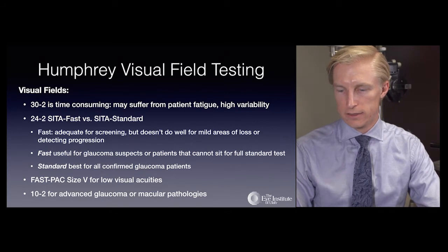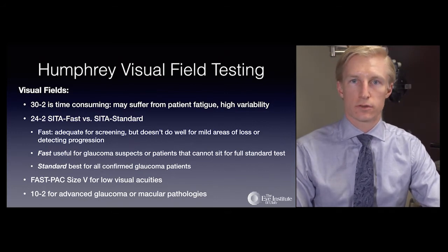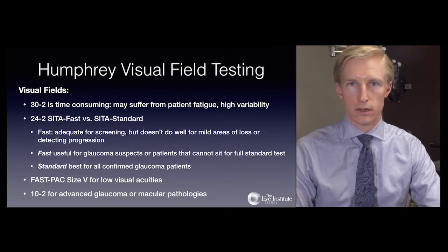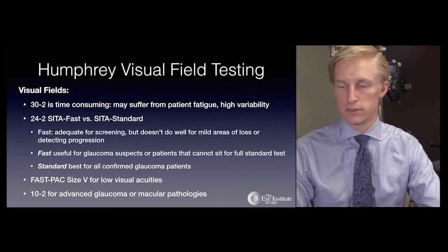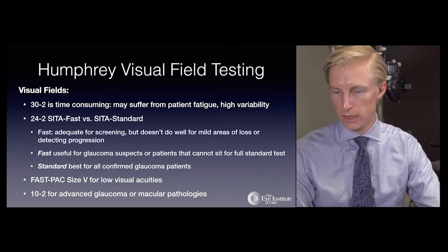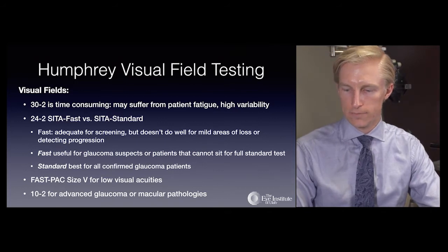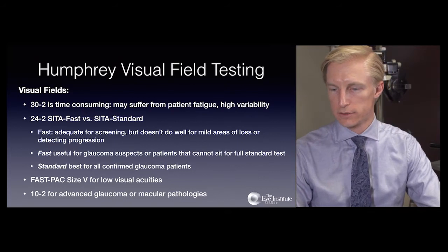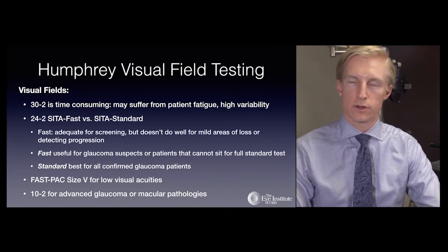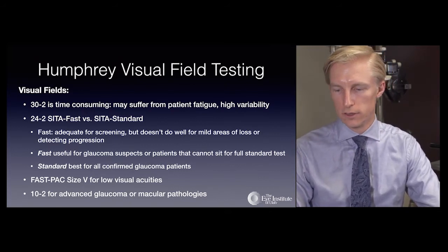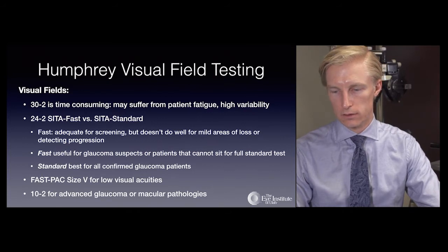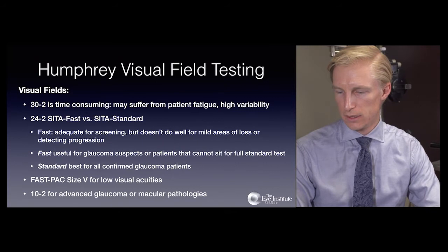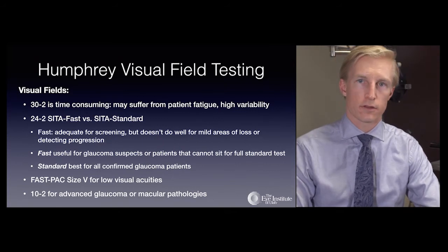The SITA FAST size 5 is available for patients with low visual acuity, providing a larger stimulus while still allowing detection of scotomas due to glaucoma. The 10-2 algorithm is useful in advanced glaucoma when peripheral vision is sufficiently changed that a wider field provides insufficient detail, and is also useful for macular pathologies.